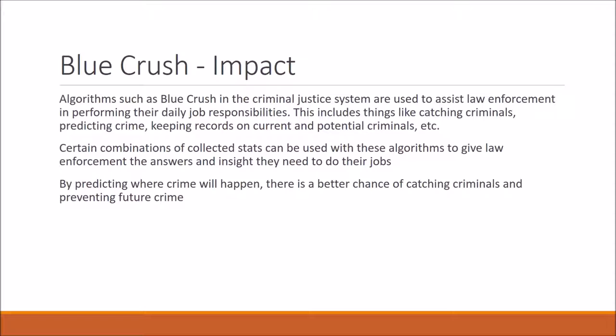The impact of this algorithm in the criminal justice system is that it is used by law enforcement to help them perform their daily job responsibilities. This includes catching criminals, predicting crime, and keeping record on current and potential criminals. Certain combinations of collected stats can be used with these algorithms to give law enforcement the answers and insight they need to do their jobs, and by predicting where crime will happen, there's a better chance of catching criminals and preventing future crimes.